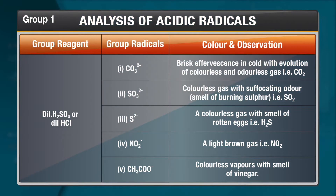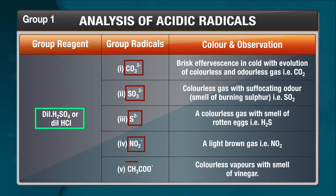Now let us group up all these radicals using the group reagent. In the first group, the group reagent is dilute H2SO4 or dilute HCl, and we have the carbonate ion, sulfide, sulfite, nitrite, and acetate ion. What will lead you to a conclusion that these ions are present in the salt that you are studying?